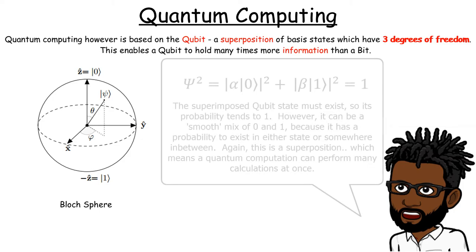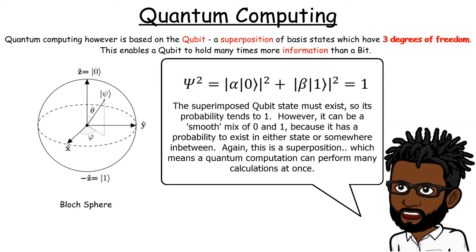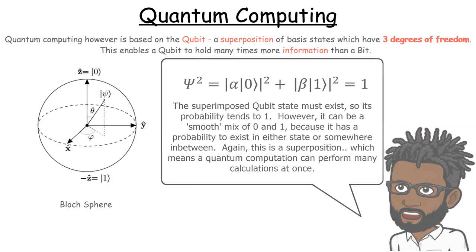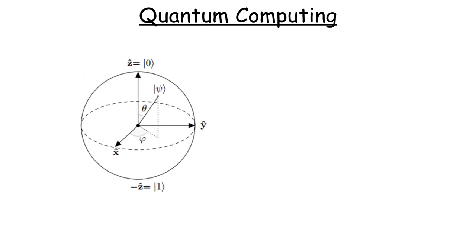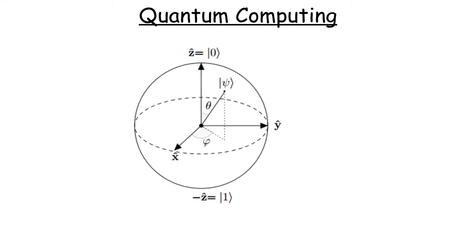Now the Bloch sphere basically describes how you can get a qubit from two basis states which are also 0 and 1s. Up, down. Now the actual qubit state can be a smooth mix of 0s and 1s because the Bloch sphere says that you can superimpose both states with a certain probability. So let's have a look at this Bloch sphere in more detail.